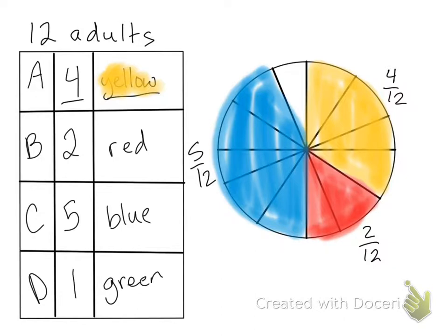And then only one person liked option D. And we're going to put that in green. Green. And that's one twelfth.